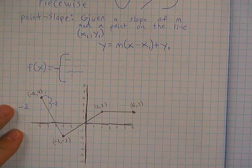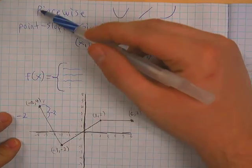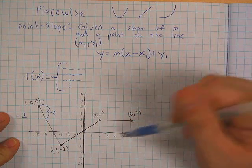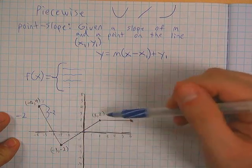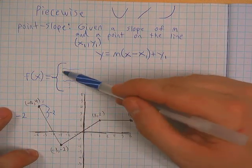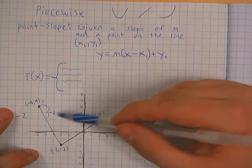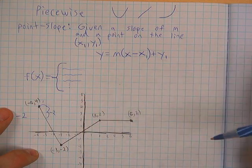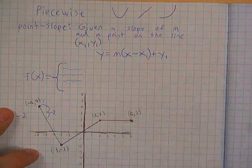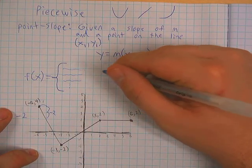To work with these functions we have to create what are called piecewise functions. It's called piecewise because it's a function that's literally in pieces. To write a piecewise function you need to list your equations for each part of the function — in this case we should have three equations because we have three different parts.